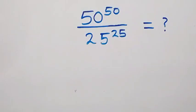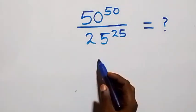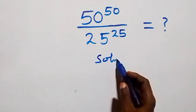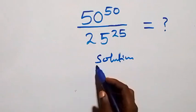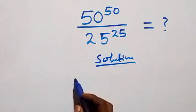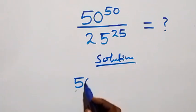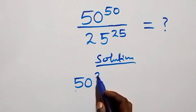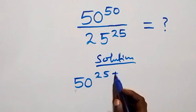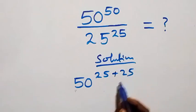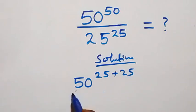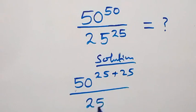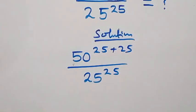Hello, you are welcome. How to simplify this nice power problem. From what we have here, we can rewrite this as 50 raised to power 25 plus 25, still with 50 raised to power 50, then divide by 25 raised to power 25.